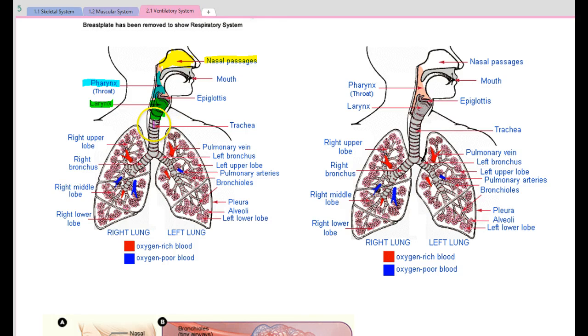We have our trachea. We have our right bronchus and our left bronchus—we would describe them as bronchi. From our left and right bronchus, we have bronchioles, the little branches that come off those.